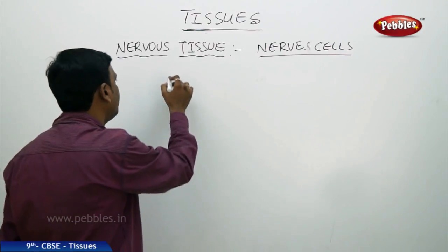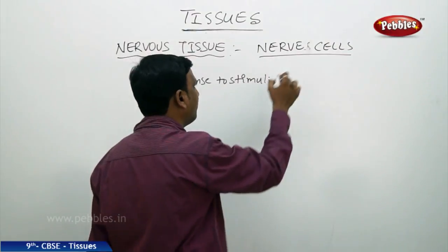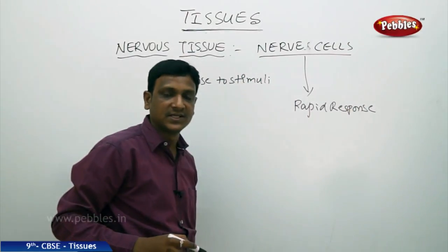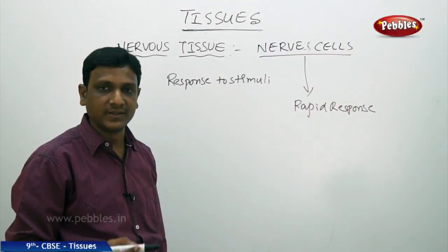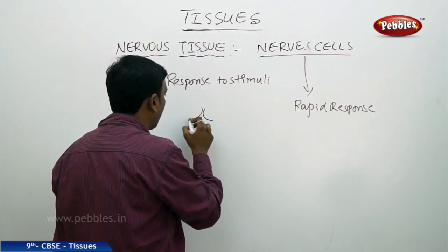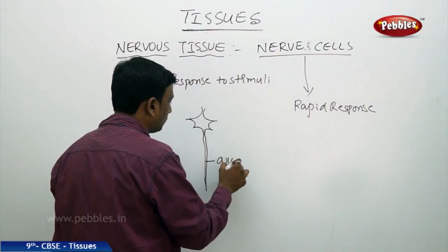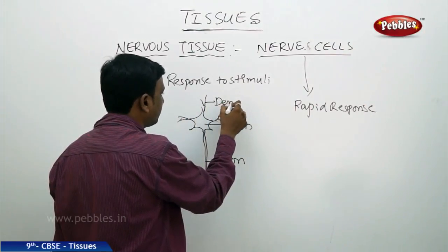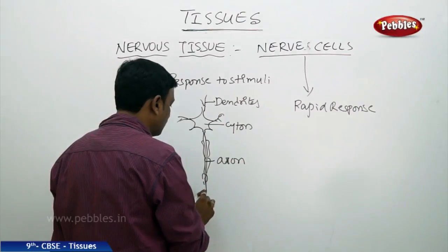All cells in our body have the property of response to stimuli, but nerve cells have very rapid responses and are specialized in carrying these responses to different parts of the body. Information is carried from one part of the body to another in the form of an electrical impulse through nerve cells. Nerve cells have a peculiar shape: a cell body called a cytone, an extended long branch called an axon, branchings from the cytone called dendrites, and the axon is covered by a myelin sheath and ends at narrow terminals.